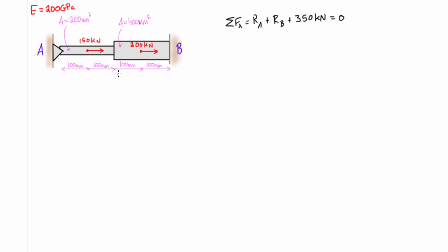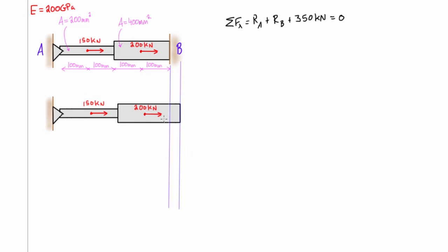The way we solve this is we remove one of the reactions and imagine how this member would stretch out or elongate if that reaction wasn't there. We remove B and call B the redundant reaction. We can calculate the total deflection of the whole member using the formula: sum over all parts of the internal force P times the length of the part, divided by the cross-sectional area and the modulus of elasticity.